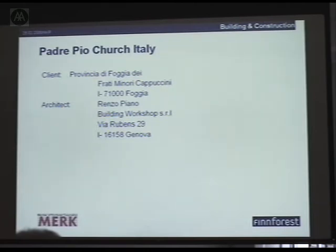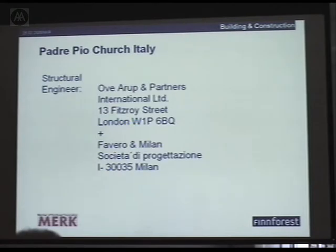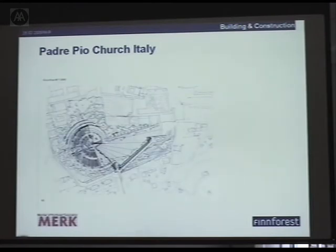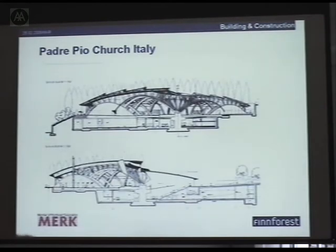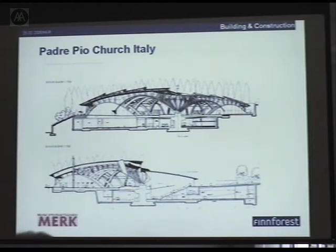This is the biggest pilgrimage church ever built in the world — a 7,400 square meter structure by Aroben Partners, and we did the whole roof structure. Our job started on top of these fascinating marble arches, which have a 50-meter span — the biggest stone arches ever built. They were pre-stressed with three cables because of earthquake problems. The church project is a really fascinating one.